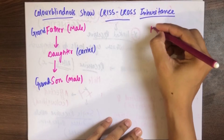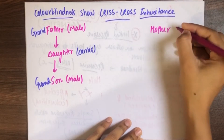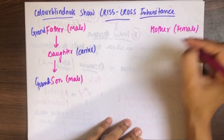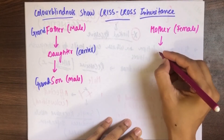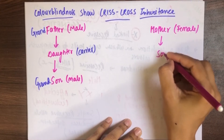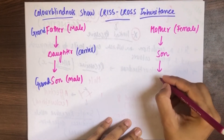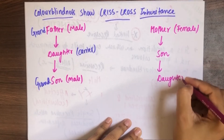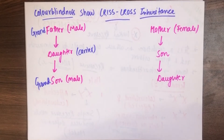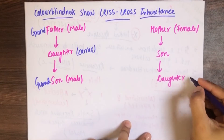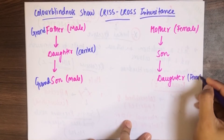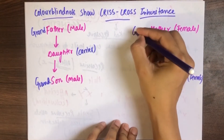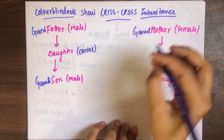जो females हैं — mother — वो directly female से female में नहीं देती. वो बीच में son को transmit करती है, और son फिर आगे daughter को देता है. तो इस तरह के pattern को — जिसमें female से directly female में disease नहीं आ रही, बीच में male को ले रहे हैं — that is known as criss-cross inheritance.